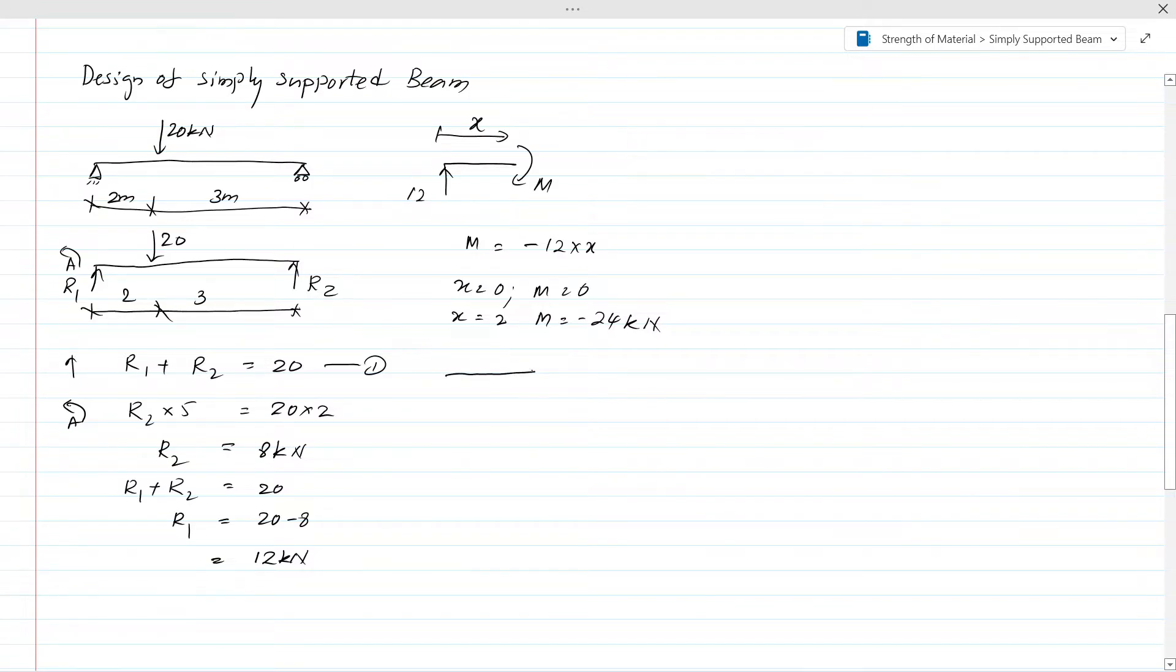Let's calculate the bending moment for the other segment. Here, we have this distance as 2 meters and this distance is x. Writing the equation for bending moment: M plus 12 times x equals 20 times (x minus 2).